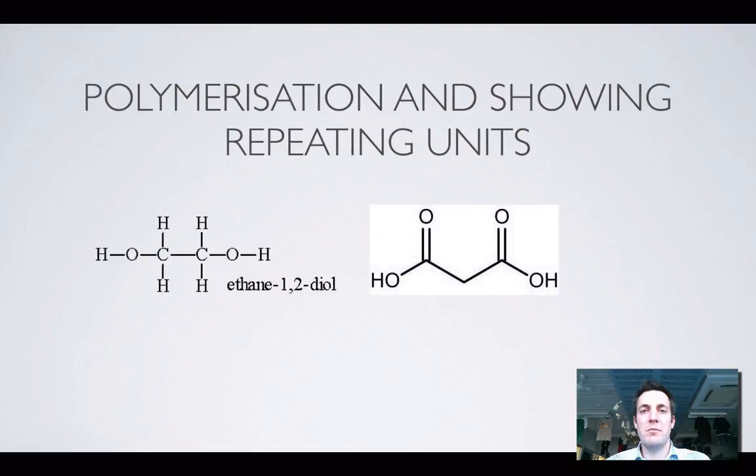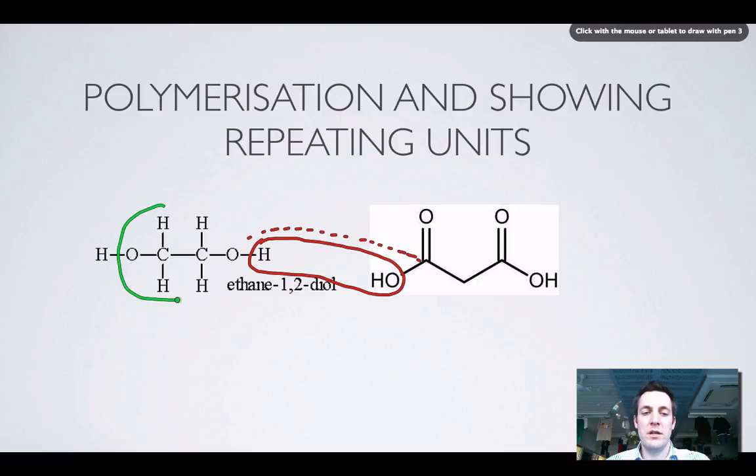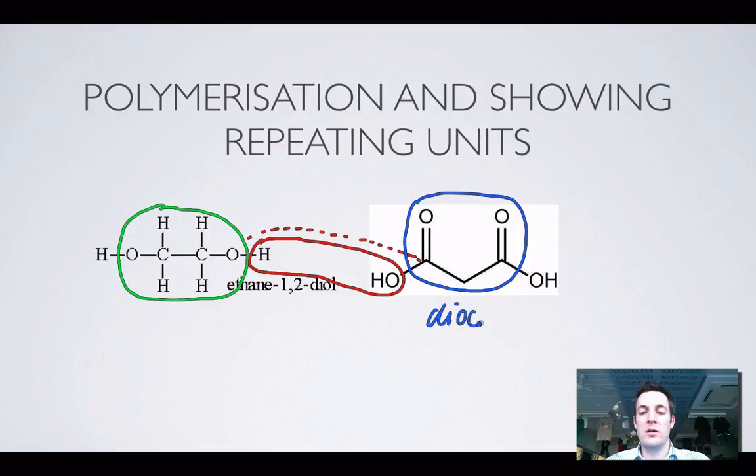If we want to make a molecule that's many thousands or possibly millions of units long, then we need an alcohol which can join at both ends to a carboxylic acid which can join at both ends so that this chain can continue. Now if we just consider what this polymer chain is going to look like, we can start thinking about what the repeating unit is like. Remember every time these molecules join together we're going to lose water and there's going to be a new bond between the oxygen of the alcohol and the carbon of the carboxylic acid.